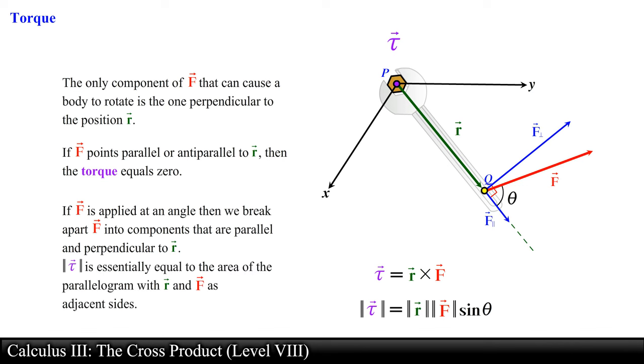The magnitude of the torque vector is essentially equal to the area of the parallelogram with the position vector r and force vector F as adjacent sides.